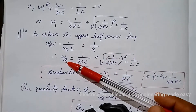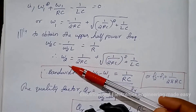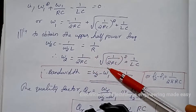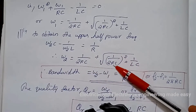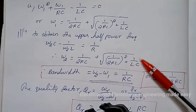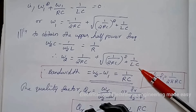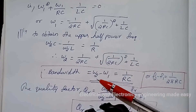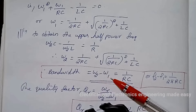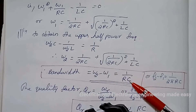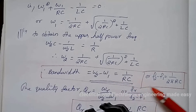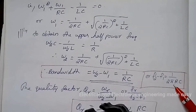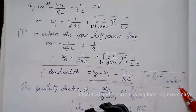Similarly, omega_2 equals 1 by RC plus square root of (1 by 2RC)² plus 1 by LC. Therefore, bandwidth equals omega_2 minus omega_1 equals 1 by RC, or we can write f2 minus f1 equals 1 by 2·pi·RC.